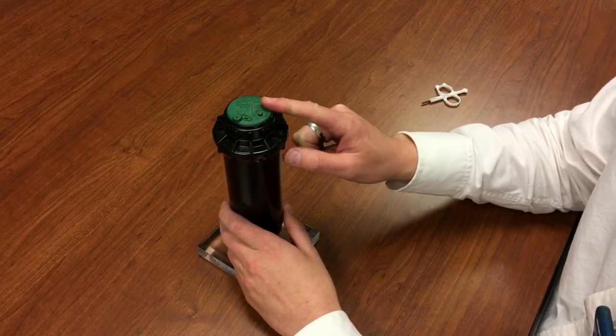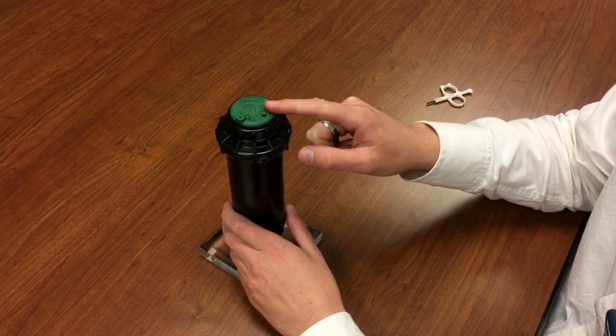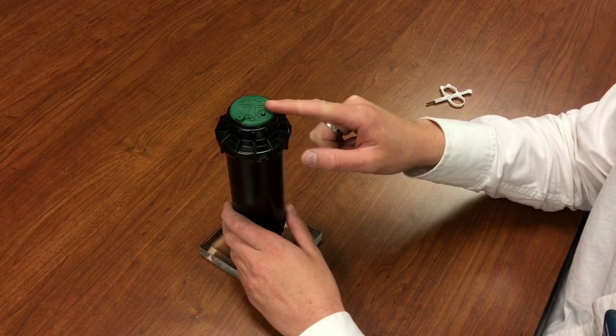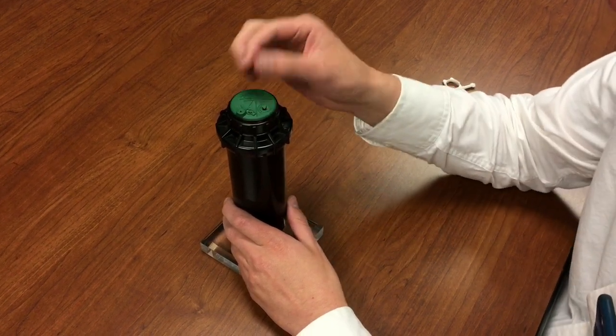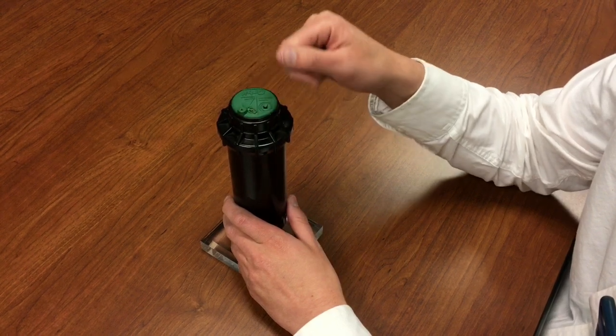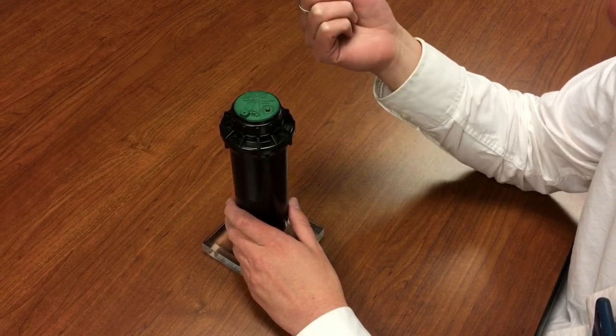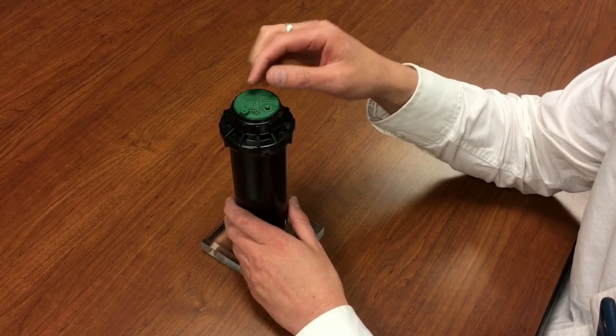We're here today to talk about some adjustments that you make to the Orbit Voyager 2 gear drive sprinkler. We've already done a video showing how to adjust the pattern to increase the radius from anywhere from a few degrees all the way to 360 degrees.